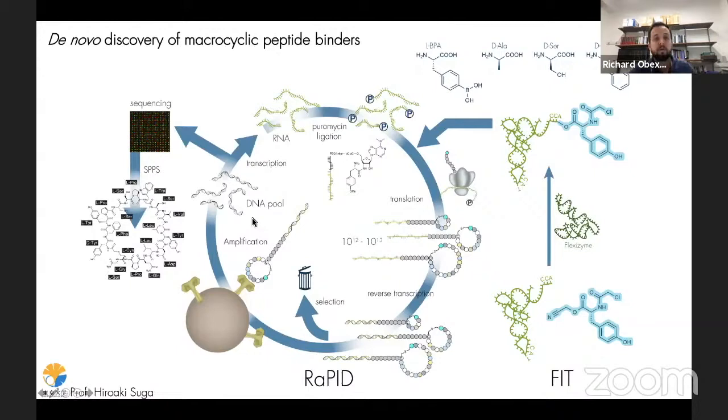Here you basically see a schematic summary of the RAPID system. It consists of an mRNA display workflow in combination with the FIT system, which stands for flexible in vitro translation, which allows genetic code reprogramming. Starting from a DNA pool which contains a randomized sequence which will later form the macrocyclic portion of the peptide, it's transcribed into RNA. Subsequently, a puromycin linker is ligated onto the RNA. Puromycin is an inhibitor of protein translation. It mimics tyrosine tRNA and can be incorporated into the nascent peptide chain. But unlike a tRNA, instead of having an ester bond, it has an amide bond and can't therefore be hydrolyzed. Therefore, upon incorporation into the peptide, we can generate a covalent link between the coding RNA and the synthesized peptide.